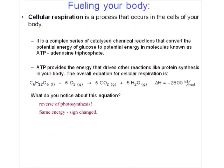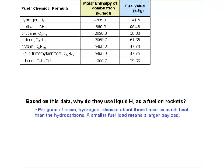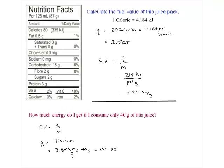Nutrition labels generally give the amount of carbohydrates, but don't tell you the source - it could be maltose, sucrose, glucose, starch, or any form of carbohydrate. They don't say what form it is, just '18 grams of carbohydrates.' Similarly, the label tells you how much fat is in your food without specifying the exact type.